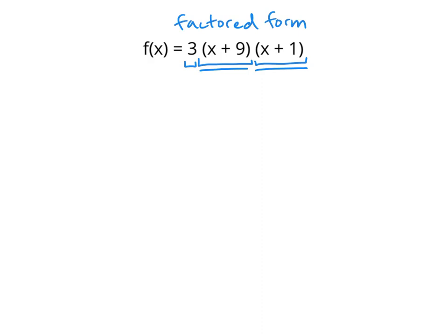I'd like to convert this factored form into the standard form of this quadratic function, by multiplying everything out like we've been doing before. But that brings up another question I have. How am I supposed to multiply all of this out? There's three things being multiplied together.